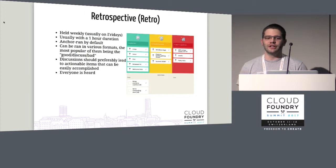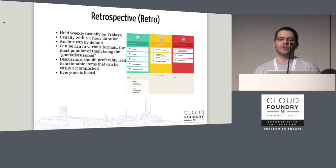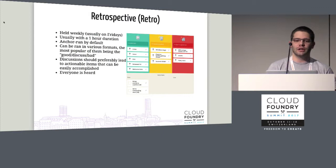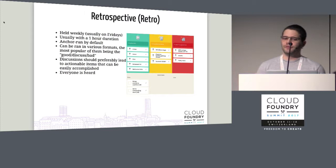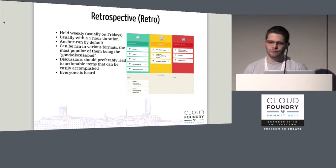The third regular meeting is the retrospective, or retro for short. Also held weekly, also an hour, happening at the end of the week. A really core part of our process is our ability to iterate and change — be it in code or in the process itself. We talk about what went well during the week, what didn't go so well, and things we might want to change. Making sure everyone is heard and that we come up with actionable things to solve problems we notice.